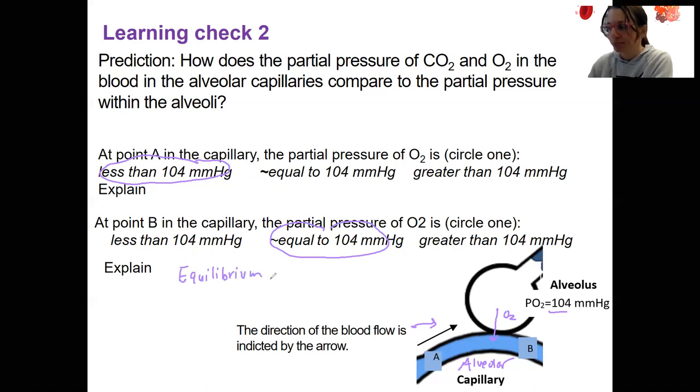Equilibrium. Equilibrium has been reached. Oxygen diffuses from that alveolus to the capillaries until the partial pressure of the two are equal.